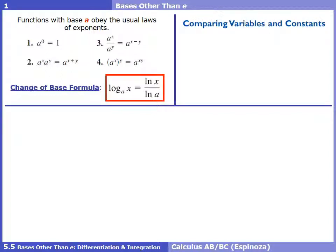This part is very important: we need to distinguish between variables and constants. Now that we're using e a lot, a common mistake is to treat e as a variable. Remember, e is just a number, 2.718... So in the first example, taking the derivative with respect to x of e to the e — since e is a number, e to the e is just a constant, and the derivative of a constant is 0.